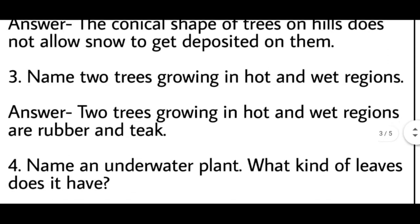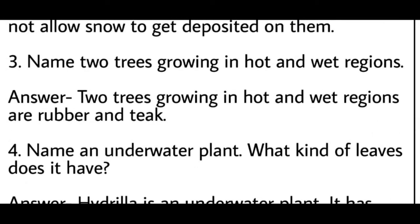Third: name two trees growing in a hot and wet region. Jaisi do trees ke naam batane hain jo hot and wet region mein grow karte hain. The answer is rubber and teak — two trees growing in a hot and wet region are rubber and teak.